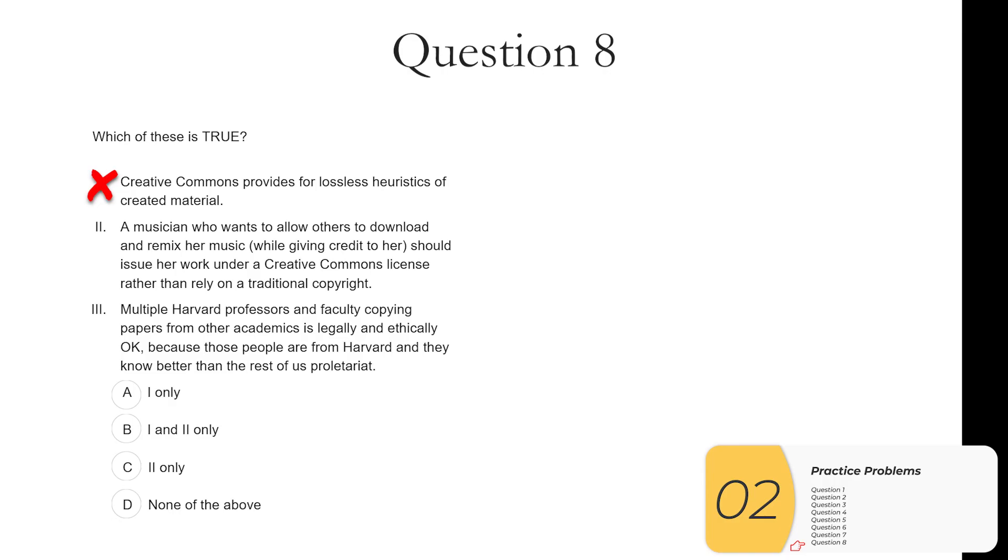Two. A musician who wants to allow others to download and remix her music while giving credit to her, should issue her work under a Creative Commons license rather than rely on a traditional copyright. So that one is true. Again Creative Commons gives us flexibility in how we manage the rights to our materials. So again this one is true. Three. Multiple Harvard professors and faculty copying papers from other academics is legally and ethically okay because those people from Harvard and they know better than the rest of us proletariat. No matter how much Harvard will try to tell you that this is true, this is not true. So the answer is two only.